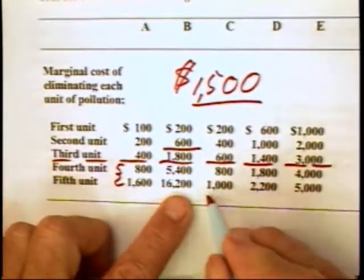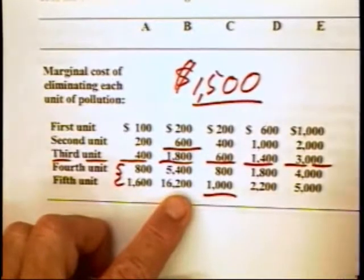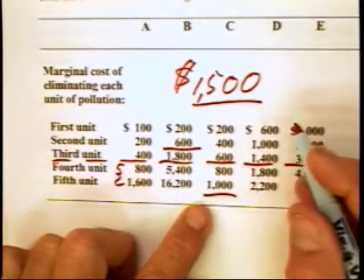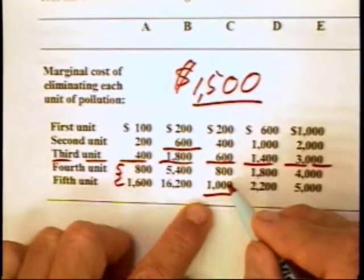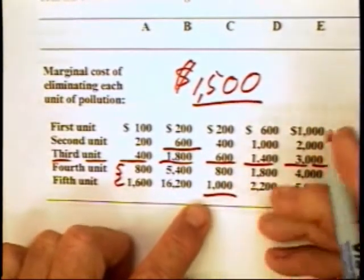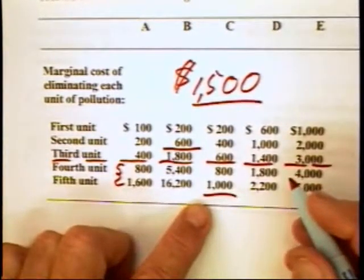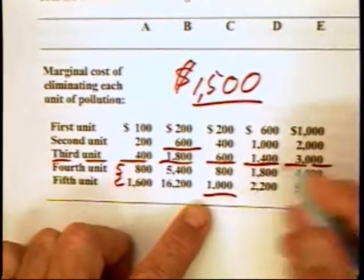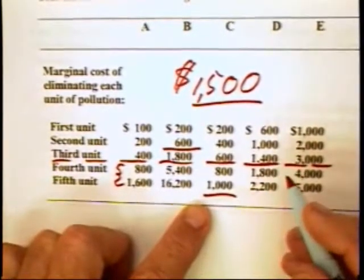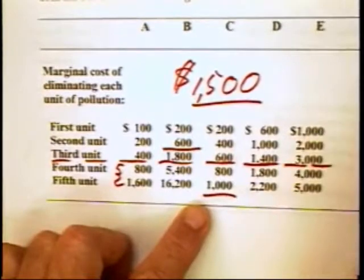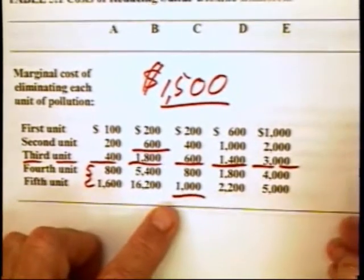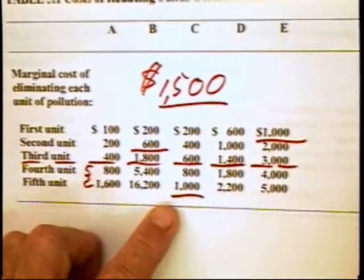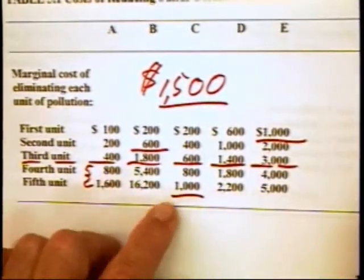Firm C would sell both of its rights because it could collect $3,000 and then spend $1,800 cleaning up its last two units of pollution. Firm D would keep the two pollution rights that it has, and firm E would buy two pollution rights.